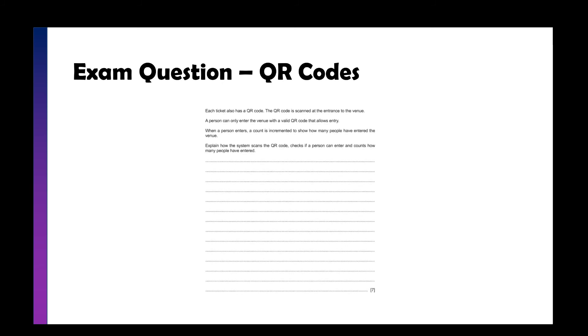Similarly, for a QR code, we've got a question here about a venue. Each ticket's got a QR code. It's scanned at the entrance of the venue. A person can enter the venue with a valid QR code. When a person enters, a count is incremented to show how many people have entered the venue. Explain how the system scans QR code and checks if someone can enter.